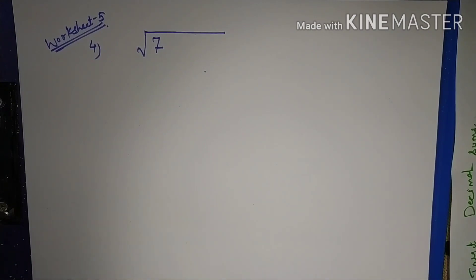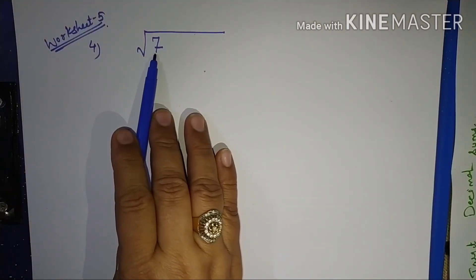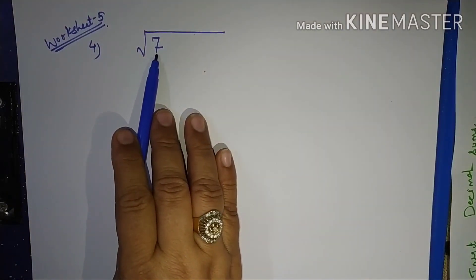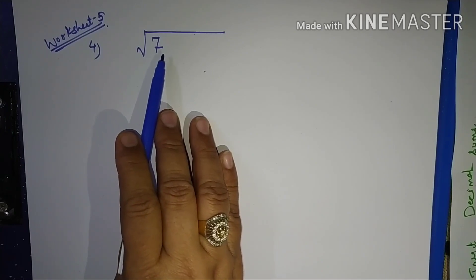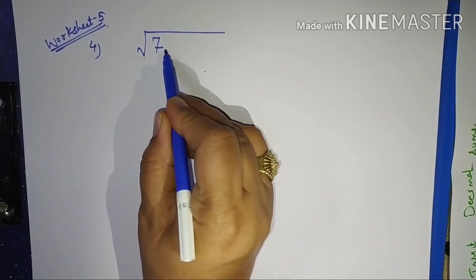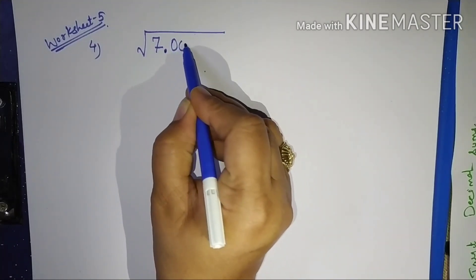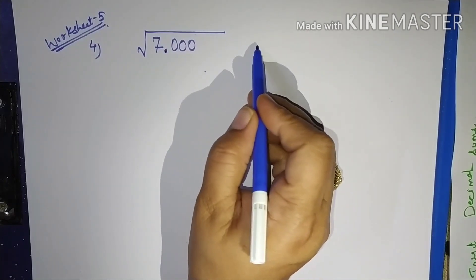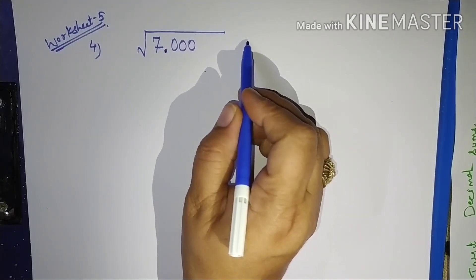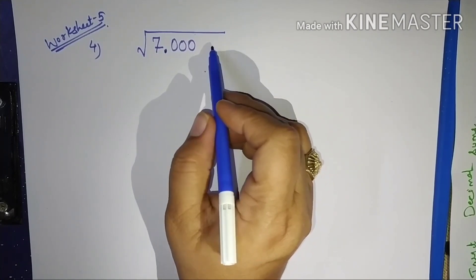The question says: find the square root of the following correct to 3 decimal places. Correct to 3 decimal places means after the decimal, 3 places must be there. But here we can see it is a single number — 7. So how will we get an answer after the decimal? We will place the decimal ourselves: 7 means 7.000000. We can take any number of zeros, but the question says 3 decimal places.